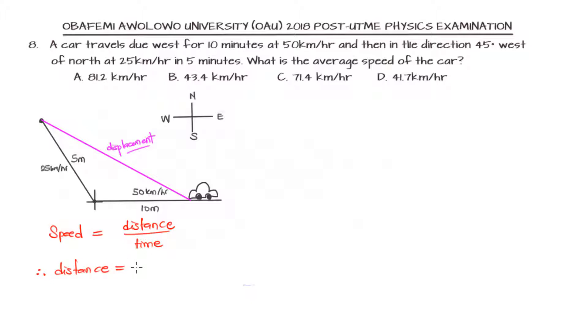From that formula, the distance is speed multiplied by time. So what we need to do in this particular question, we don't need to bother ourselves with the direction. We just take the two case scenarios: the first journey at 50 kilometers per hour and the second at 25 kilometers per hour, find the distance, and then evaluate the average speed of the car.